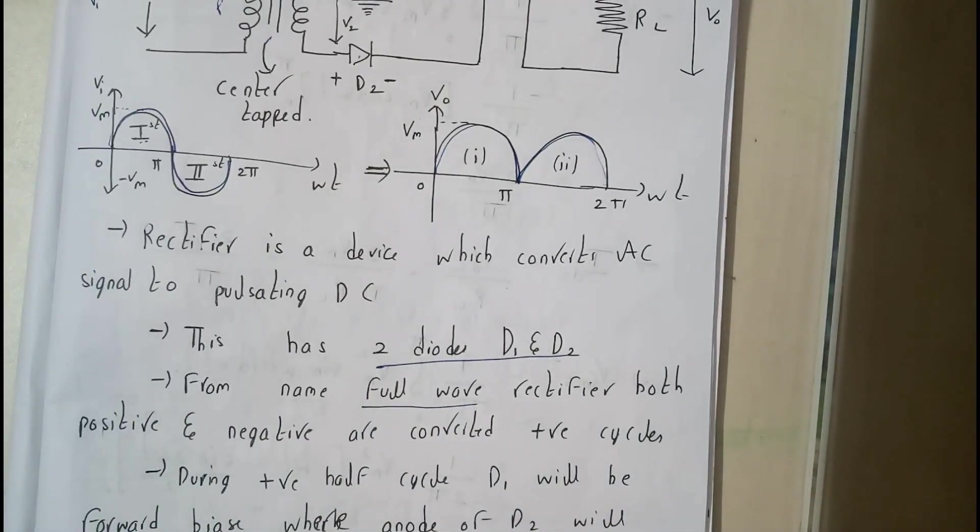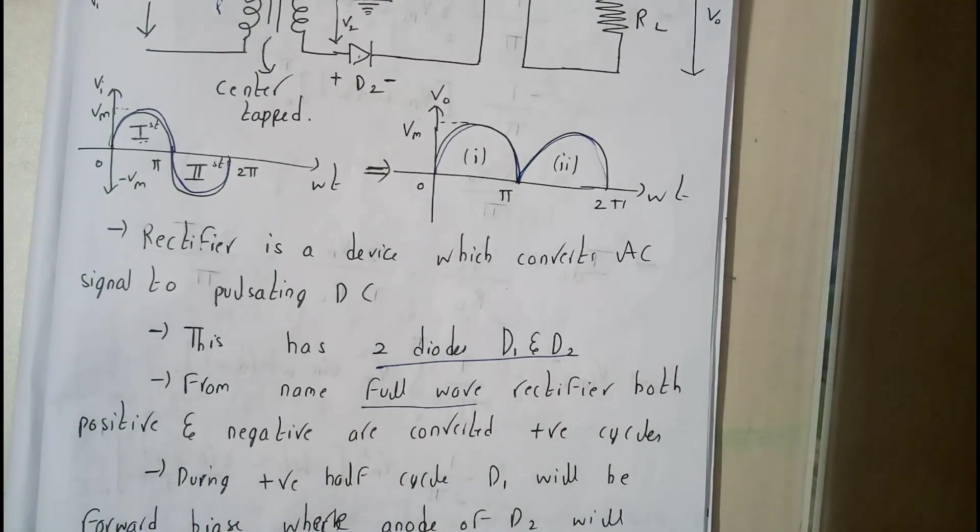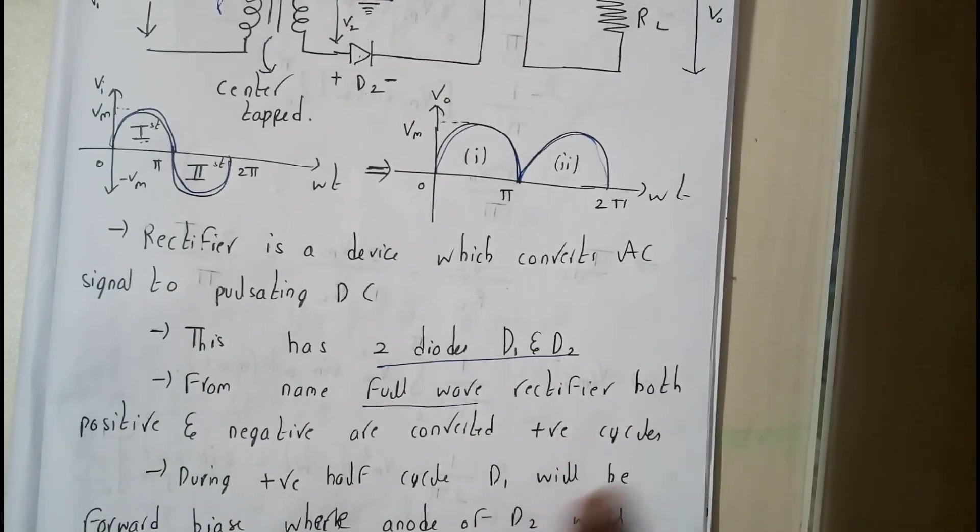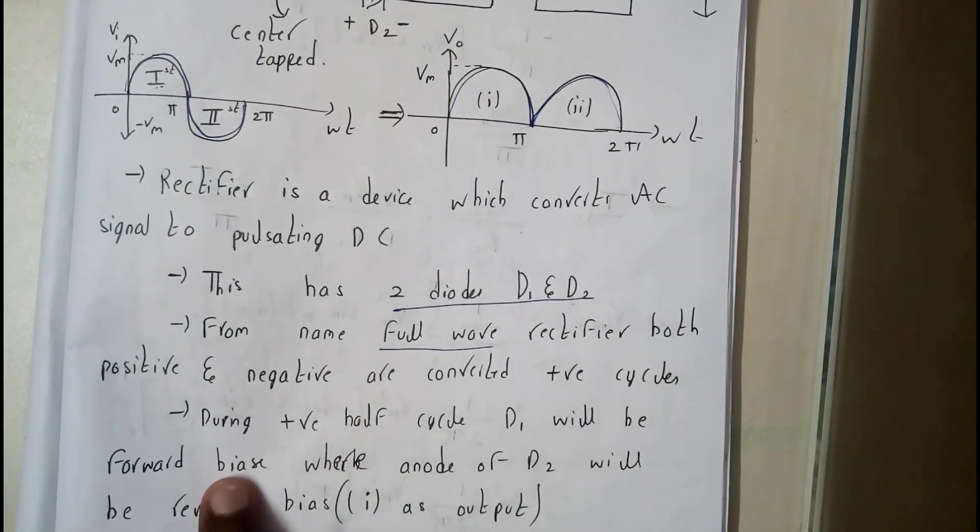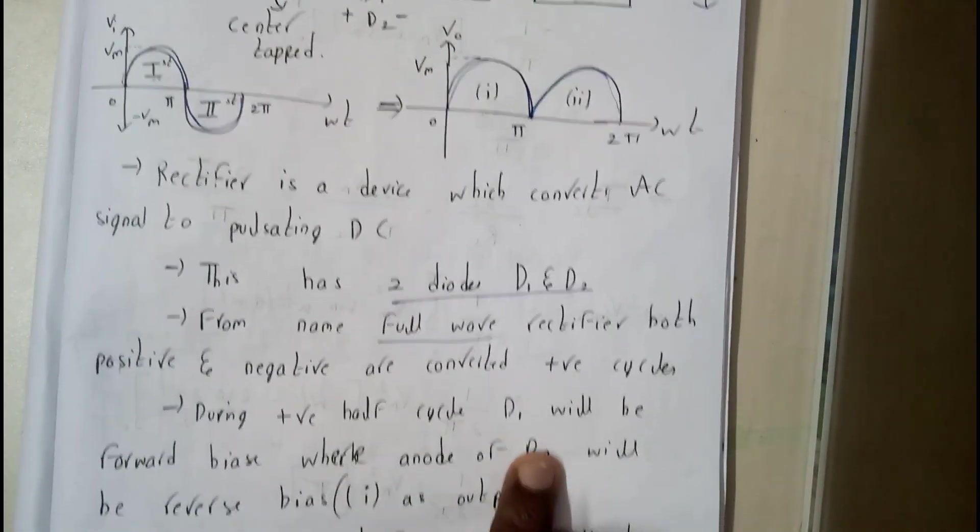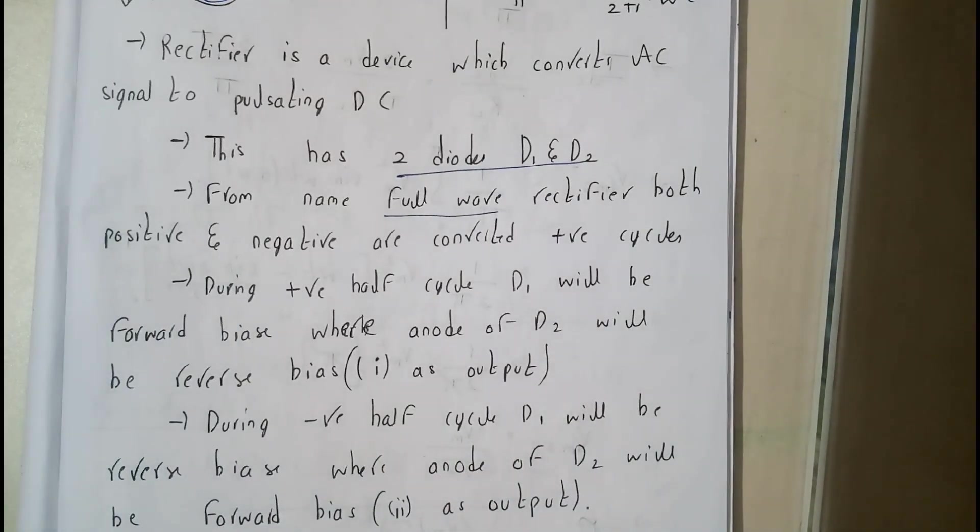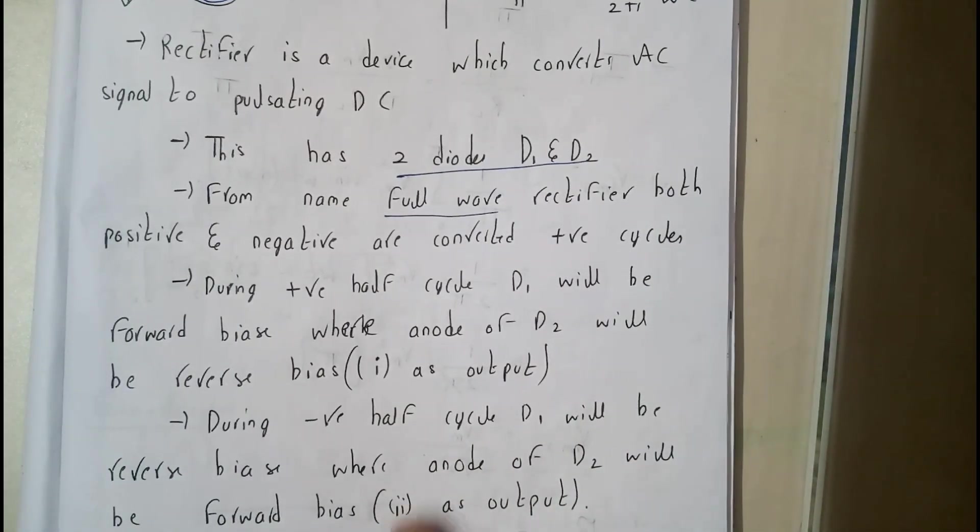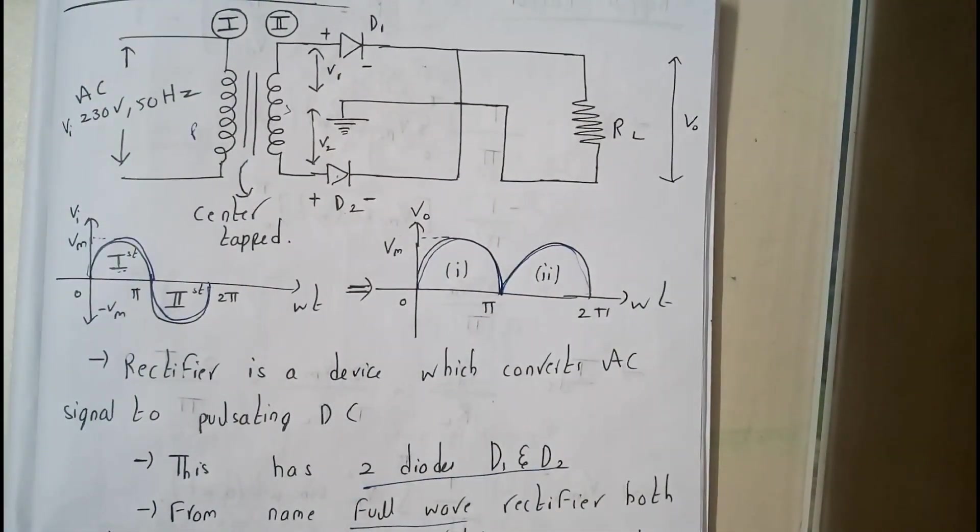From the name itself you can say the full-wave rectifier—both positive and negative cycles are converted into positive cycles. During the positive half, D1 will be forward bias and D2 will be in reverse bias, so we get the output. In the second case, when we apply the negative half cycle, D1 will be in reverse bias and D2 will be in forward bias, so we're gonna get the second output.